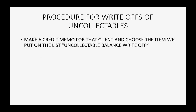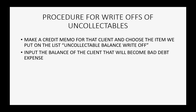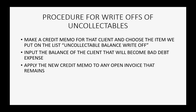Now that we're set up, let's discuss the procedures for writing off uncollectible clients. First, we have to make a credit memo for that client and choose the item that we just put on the list of products and services — Uncollectible Balance Write-Off. We then input the balance of the client that will become the bad debt expense. Then we will apply that new credit memo to any remaining open invoice, and that will zero out the client's balance.